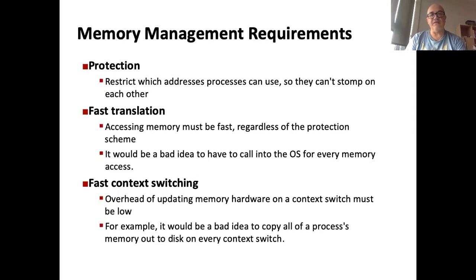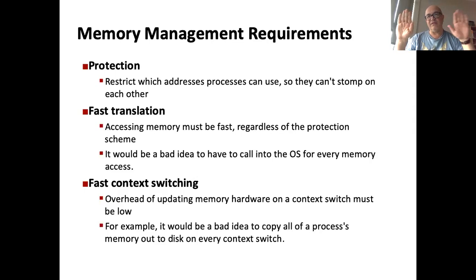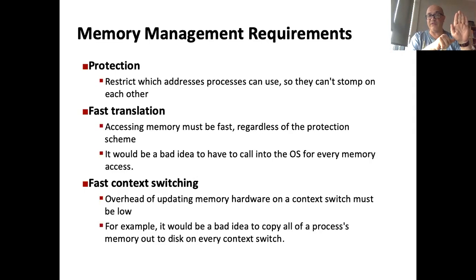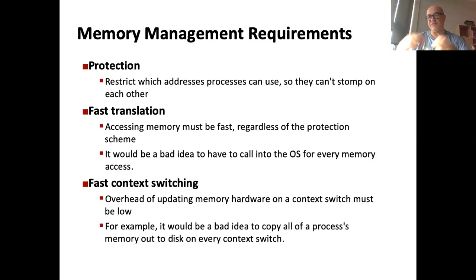In context switching, the virtual memory of process A is switched to the virtual memory of process B. If during a context switch you had to copy 100 megabytes of memory from somewhere to somewhere else, that would not be feasible. So you have to make these things as fast as possible, and thanks to hardware we can do that.